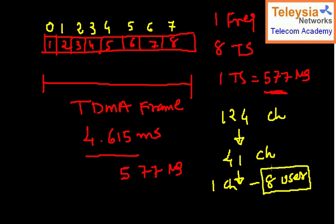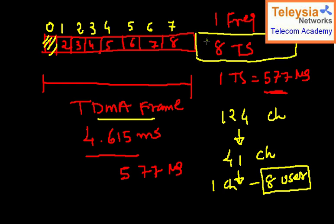Remember that this is the TDMA frame. For example, if I am user number one, I get one chance in the first TDMA frame. To get a second turn I need to wait for the next TDMA frame and use that first time slot again — so I jump over the other slots and use only my assigned time slot.